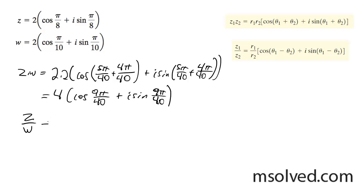And then for z divided by w, we get 2 divided by 2 and the cosine of 5 pi over 40 minus 4 pi over 40 plus i sine of 5 pi over 40.